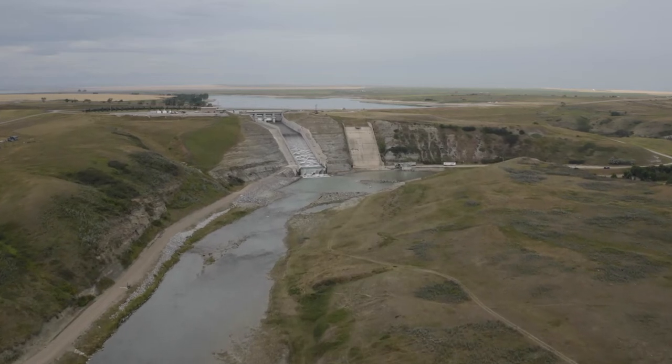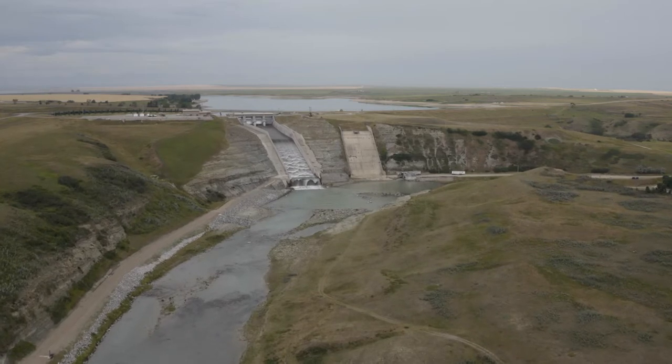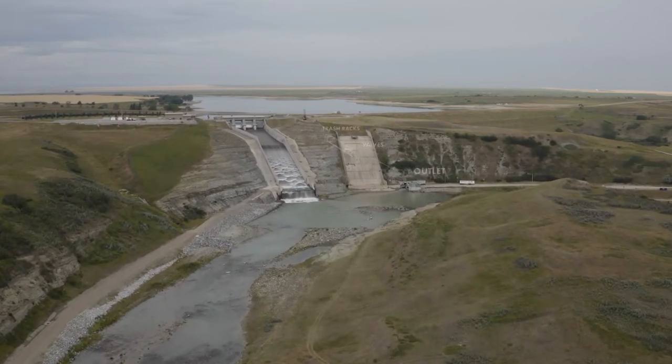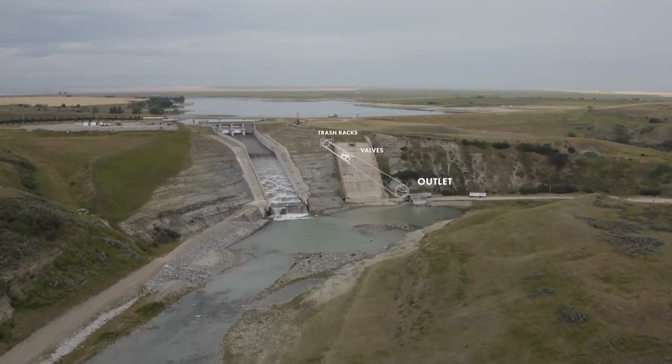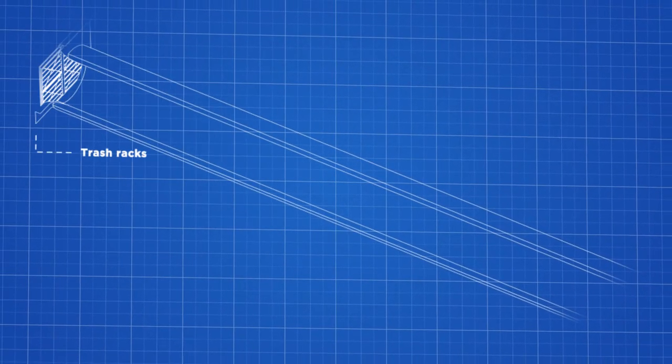Here, a spillway serves to pass high flows and flood water safely from upstream to downstream, but there is also a 2,200-foot long, 20-foot diameter concrete tunnel underneath the dam. This outlet's primary purpose is to maintain a constant flow of water in the St. Mary River downstream of the dam.